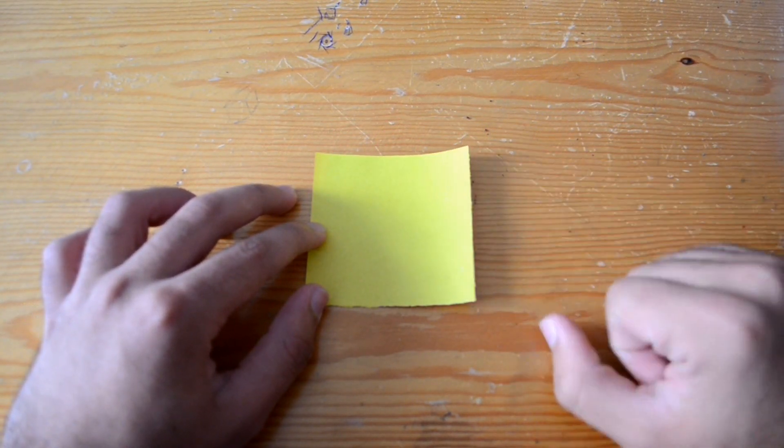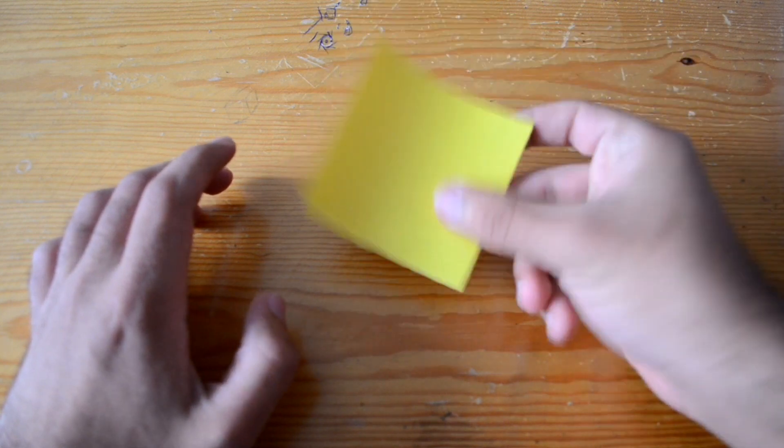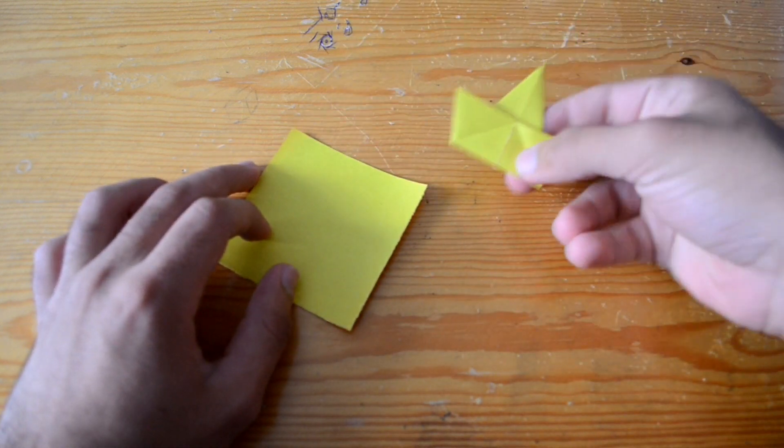So first thing, you need a square paper. I'm gonna make a model like this one.